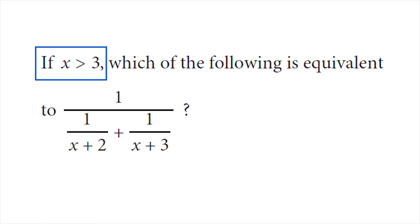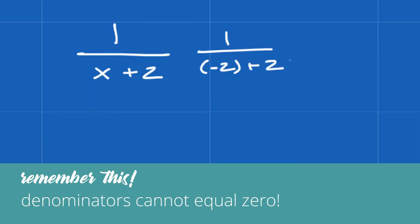This information is actually kind of useless. The only limitations to x that you should care about is making sure that x doesn't equal negative 2 or negative 3. The reason why?